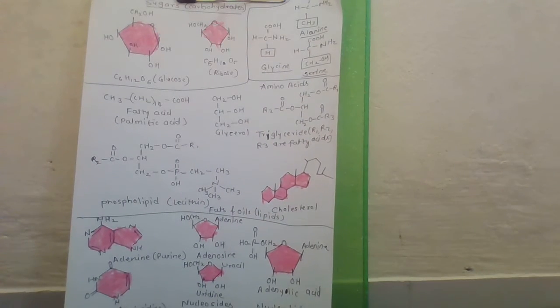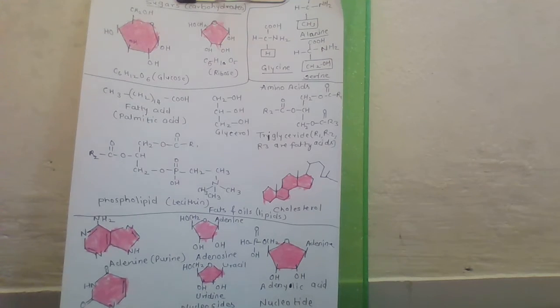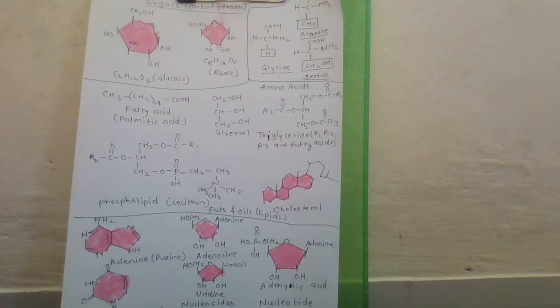There are some aromatic amino acids. The names are tyrosine, phenylalanine, tryptophan. These are the aromatic amino acids.